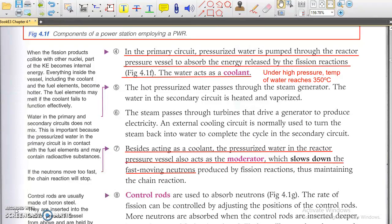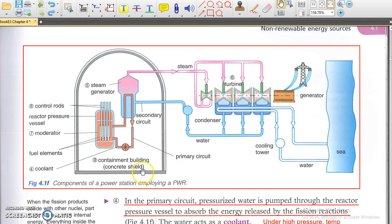Note that the pressurized water in the primary circuit may contain radioactive fallouts, and hence, radioactive. The water in the secondary circuit is not radioactive, on the other hand. That is why a concrete shielding is necessary to contain and protect the primary circuit.